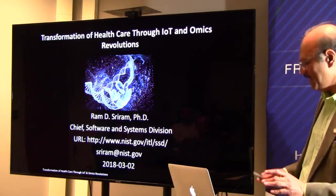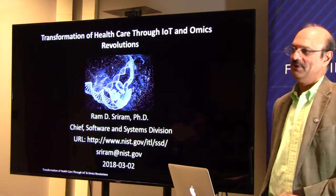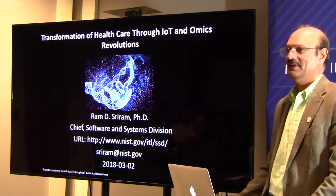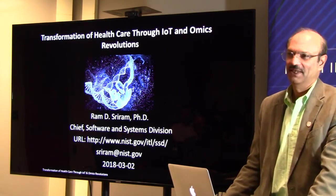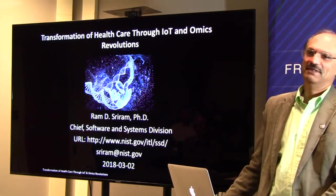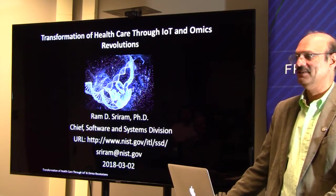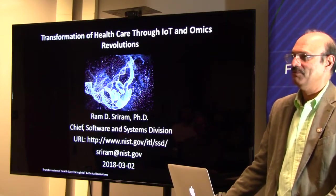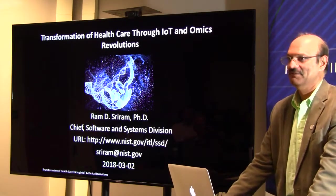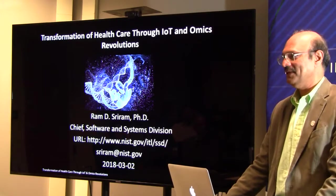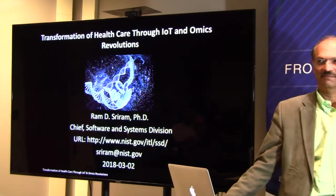If you look at the global economies, healthcare is about 3.3 trillion dollars in the United States — that's how much you spend. Manufacturing is about 1.7 trillion dollars, so together it's about 5 trillion dollars, which covers almost one third of the GDP of the United States. These are the two areas I'm going to be focusing on.